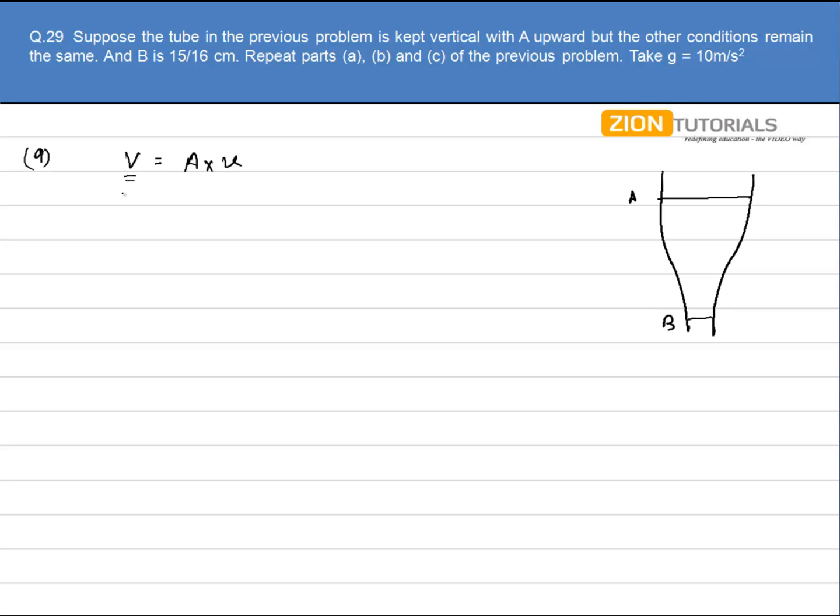Area of cross section will be the same. Volume flow is 1 cc, that is 10 to the power minus 6 meter cube, and area of cross section is given as 4 mm square. So it is 4 into 10 to the power minus 6 into velocity. Velocity will be the same as in the previous question, that is 25 cm per second.